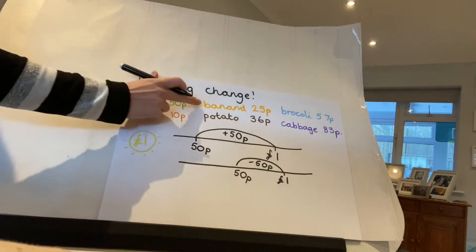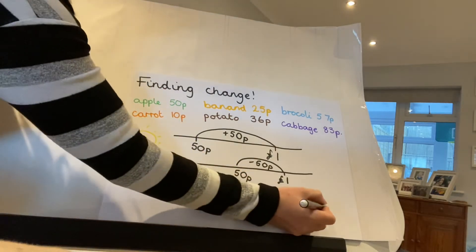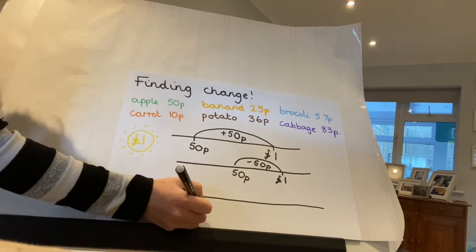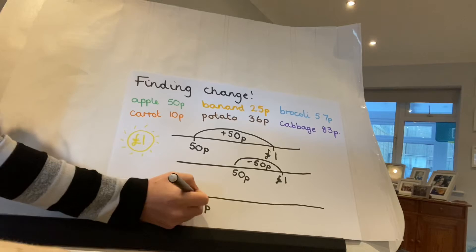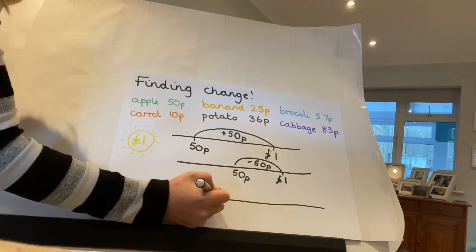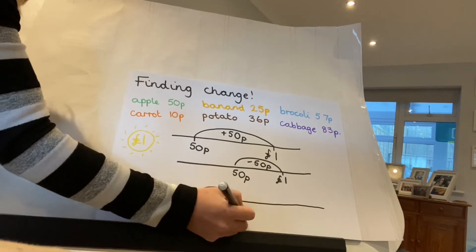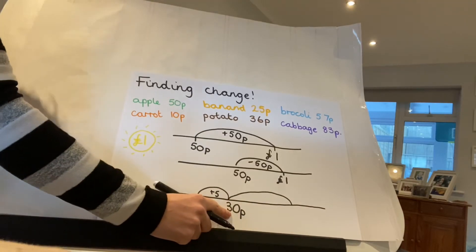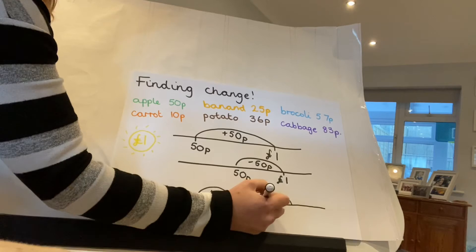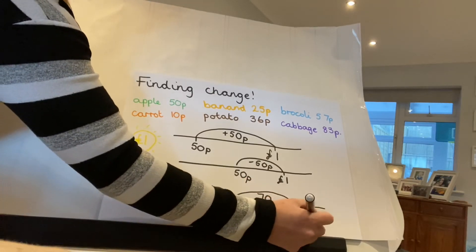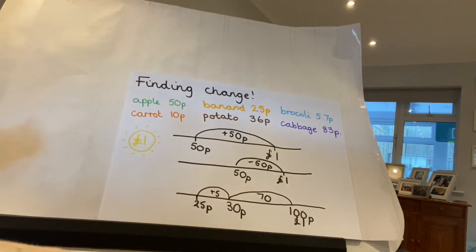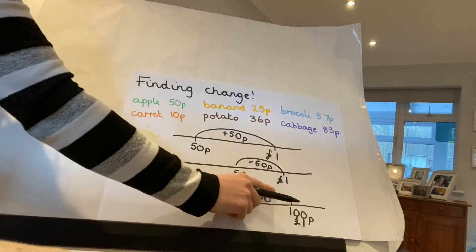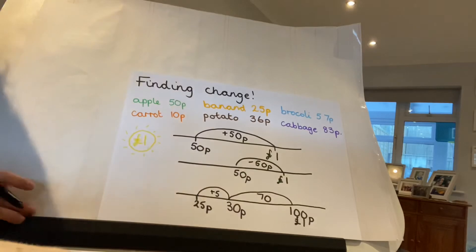This time I'm going to buy my banana. So again, I'm looking for the difference. A banana costs 25 pence. If I add 5 — because I know 5 and 5 makes 10 — that would take me to 30 pence. Then I know I need to add 70 pence, because 3 and 7 make 10, therefore 30 and 70 make 100, to get to my 100 pence or my pound. I've got my 5 pence and my 70 pence, so add them together: that would be 75 pence.